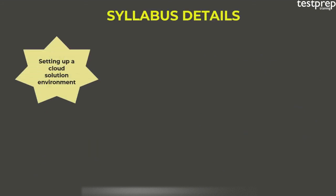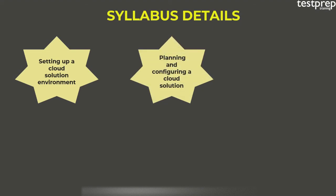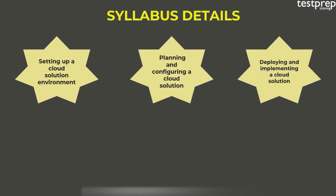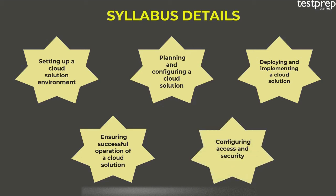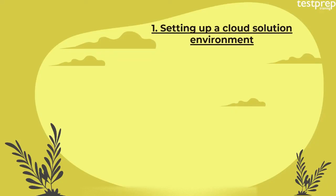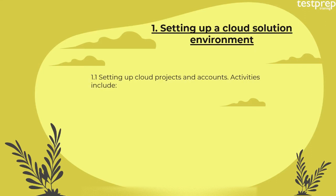Syllabus details: First, setting up a cloud solution environment; second, planning and configuring a cloud solution; third, deploying and implementing a cloud solution; fourth, ensuring successful operation of a cloud solution; fifth, configuring access and security. Now let us discuss the syllabus topics in detail. First, setting up a cloud solution environment — number one: setting up cloud projects and accounts.